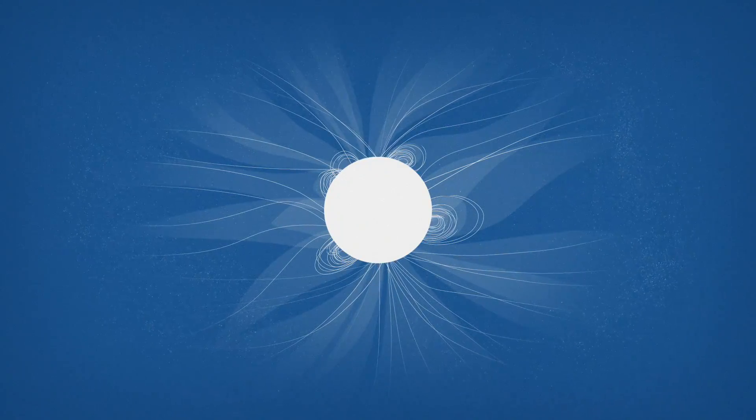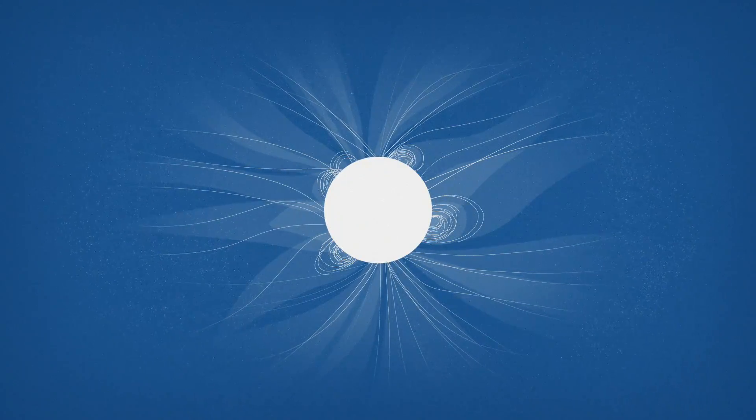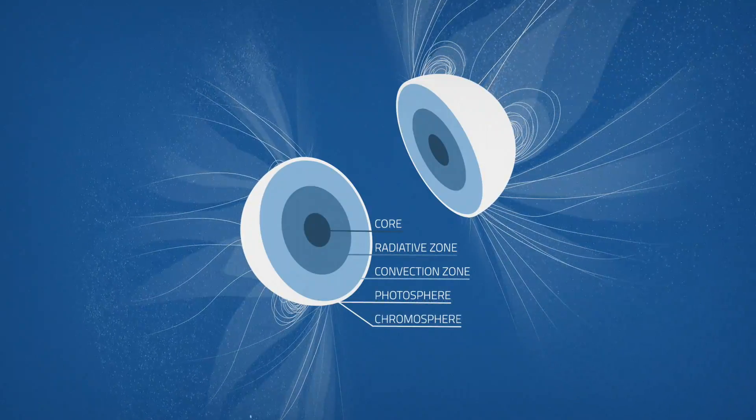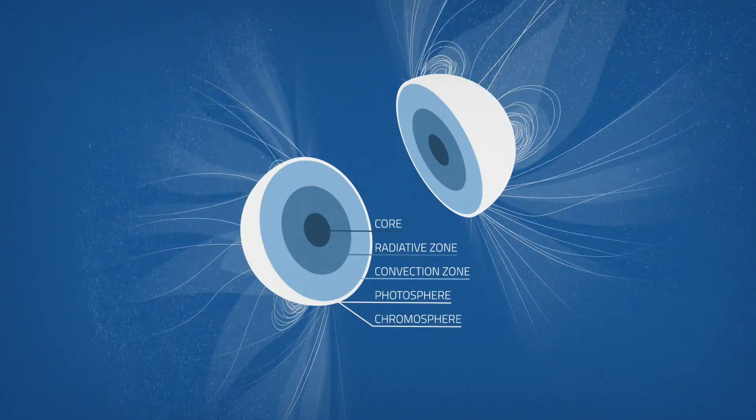But the transition is not perfectly seamless. Our star can be characterized into layers. Each region has its own temperature ranges and special properties.